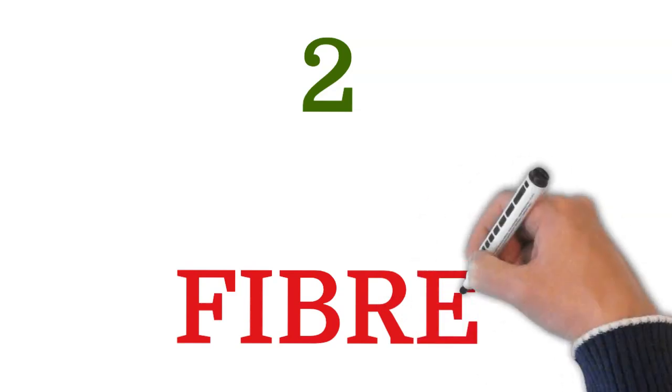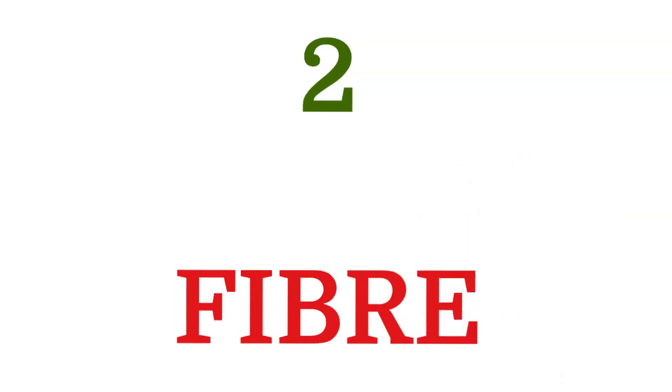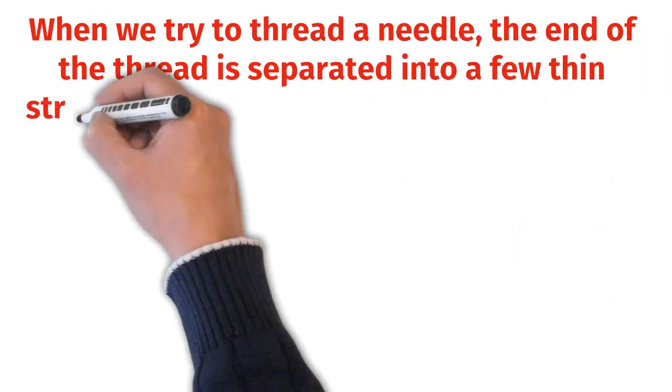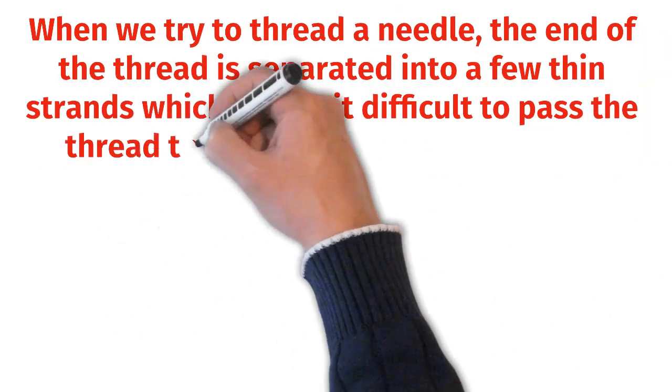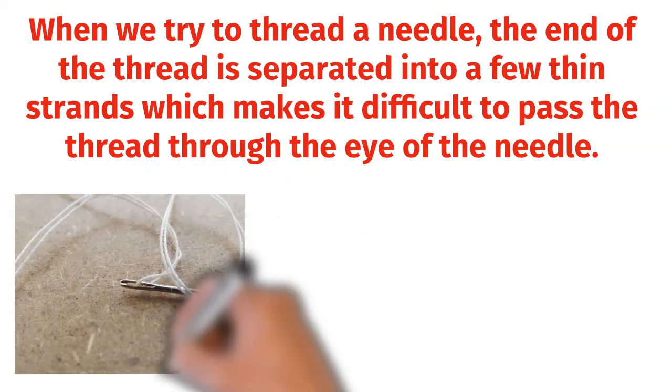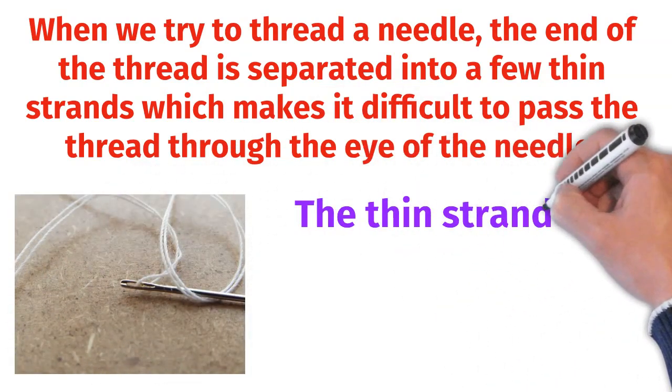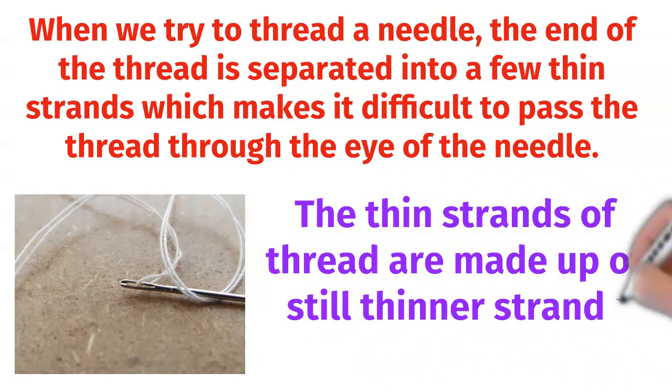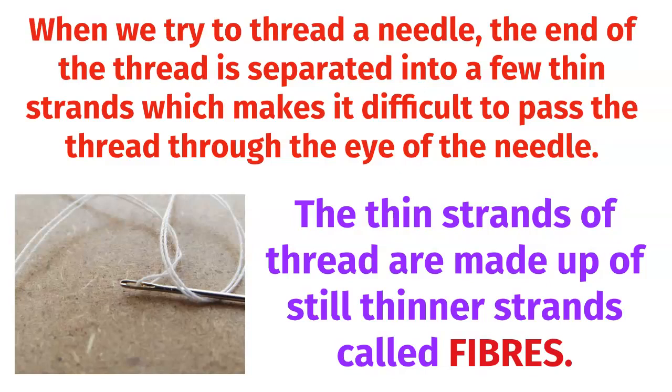Next come to the heading fiber. When we try to thread a needle, the end of the thread is separated into a few thin strands, which makes it difficult to pass the thread through the eye of the needle. The thin strands of thread are made up of still thinner strands called fibers.